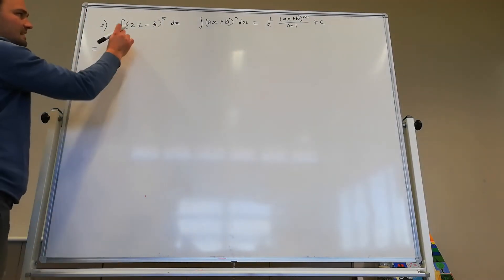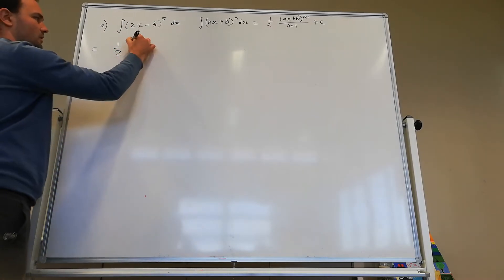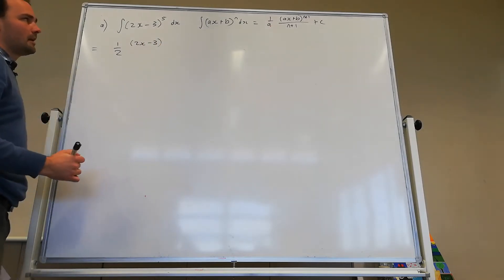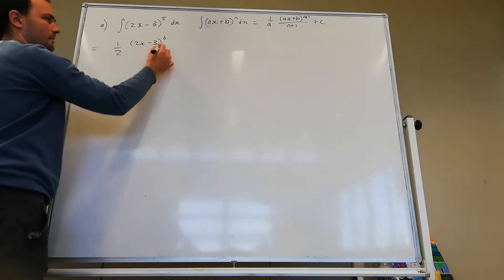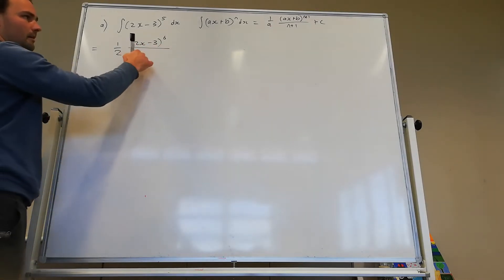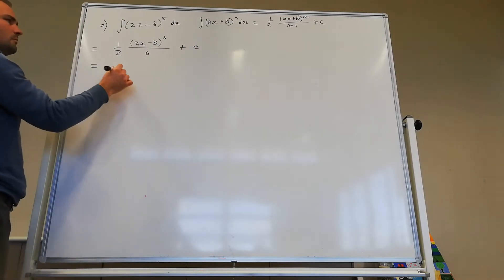So in this case, a is 2. So it's going to equal 1 on 2. And then we have times ax plus b to the power of n plus 1. So we're going to have 6 up here. 5 plus 1 is 6. And then divided by 5 plus 1 is 6. And then plus c. And we'll simplify that.